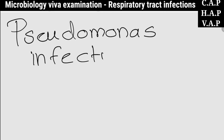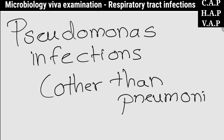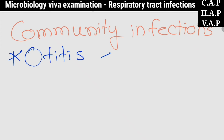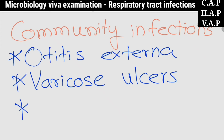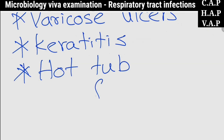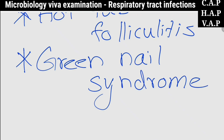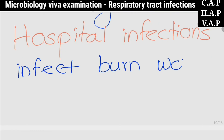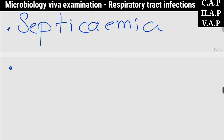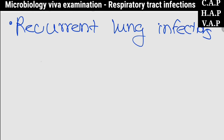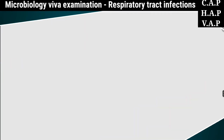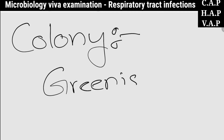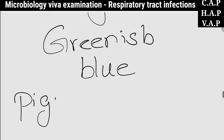Infections caused by Pseudomonas aeruginosa other than pneumonia include community infections such as otitis externa, varicose ulcers, keratitis, folliculitis, and green nail syndrome. It is also a causative agent for hospital infections in compromised individuals, including infections in burn wounds and ulcers, septicemia, recurrent lung infections in patients with cystic fibrosis, and catheter-associated urinary tract infections. Pseudomonas aeruginosa colonies produce a greenish-blue pigment called pyocyanin on common culture media.